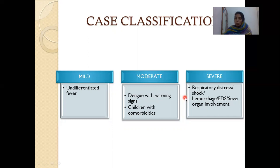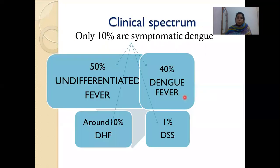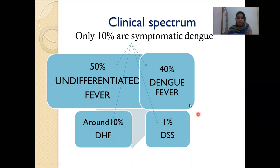Severe dengue means so much capillary leak leading to respiratory distress and shock, there is hemorrhage, expanded dengue syndrome, or severe organ involvement. The clinical spectrum shows only 10% are symptomatic dengue. Of that 10%, about 50% present as undifferentiated fever, 40% as dengue fever, around 10% as dengue hemorrhagic fever, and only 1% as dengue shock syndrome.